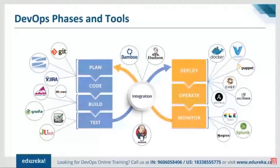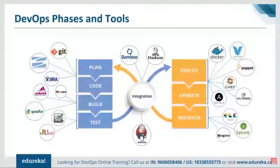The built application is deployed onto test servers for testing, then onto production servers for release, and is continuously monitored by tools like Nagios and Splunk. For build, we have tools like Maven and Gradle — for Java applications we usually go with Maven. For end-user or functional testing, we use Selenium. To deploy onto production servers, there are configuration management tools like Puppet, Chef, Ansible, and SaltStack.